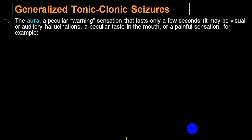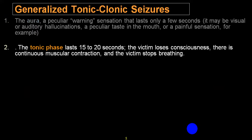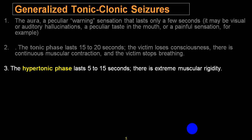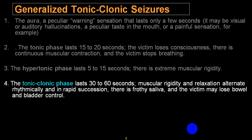In general, aura will be a warning sign, which may last for a few seconds. The commonest is visual aura, second common is auditory aura. Then the person will go into the tonic phase, lasting for 15 to 20 seconds, with loss of consciousness and continuous muscular contraction without any relaxation. The person can even have apnea because the larynx will go into spasm, and will also develop a classical epileptic cry. During this stage, the person can even have opisthotonus. It is a short-lasting phase. Then the person will go into the clonic phase, which will last for 30 to 60 seconds, with alternate relaxation and contractions.